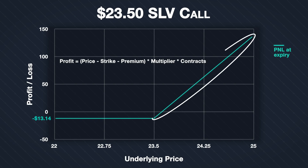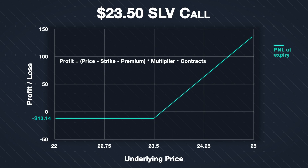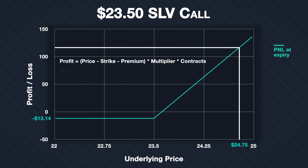The profit or loss line increasing to the right of our strike price is this formula plotted for each underlying price of SLV at expiry. As an example, if the price of SLV at expiration is $24.75, we calculate: (24.75 − 23.50 − 0.1314) × 100 × 1 = $111.86. Our option to purchase SLV at $23.50 would be worth $1.25 per share, or $125 total. Subtracting our total cost of $13.14 gives us a profit of $111.86.